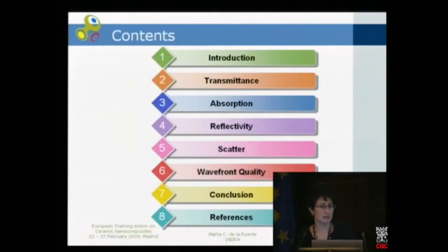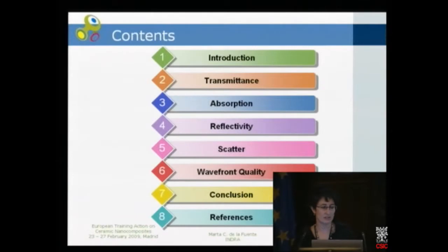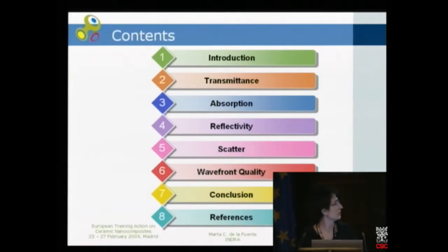I'll start with a small introduction about transparency. I'll introduce the technical concept of transparency, that is the transmittance. I'll show you the three more important factors that determine the transparency of a material: absorption, reflectivity, and scatter. Later I'll give a short overview of what we call the wavefront quality of a system, and finally, with the conclusion, I'll show you what kind of material we're looking for.